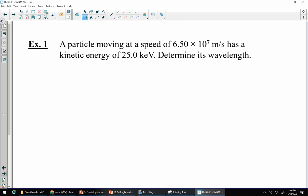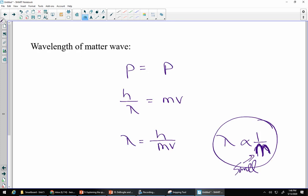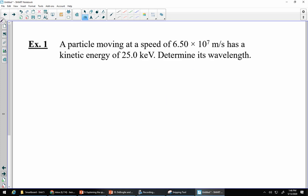Let's check out a quick example here. We've got a particle moving at a speed of 6.5 times 10 to the power of 7. It has a kinetic energy of 25 kiloelectron volts. We want to determine its wavelength. I need Planck's constant, the speed that's given to us, and the mass. So I've got speed and kinetic energy. I should be able to figure out mass. One little problem is my kinetic energy is in kiloelectron volts, where really I want it in joules if we're using 0.5 mv squared.